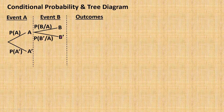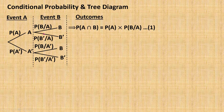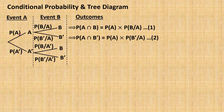The probability of B not occurring given that A has happened is P(B'|A), and the probability of B not occurring given that A has not happened is P(B'|A'). For the final outcomes, each path represents one outcome. The first outcome is A intersect B, with probability equal to P(A) times P(B|A). The second outcome is A intersect B', with probability P(A) times P(B'|A). The third outcome is A' intersect B.